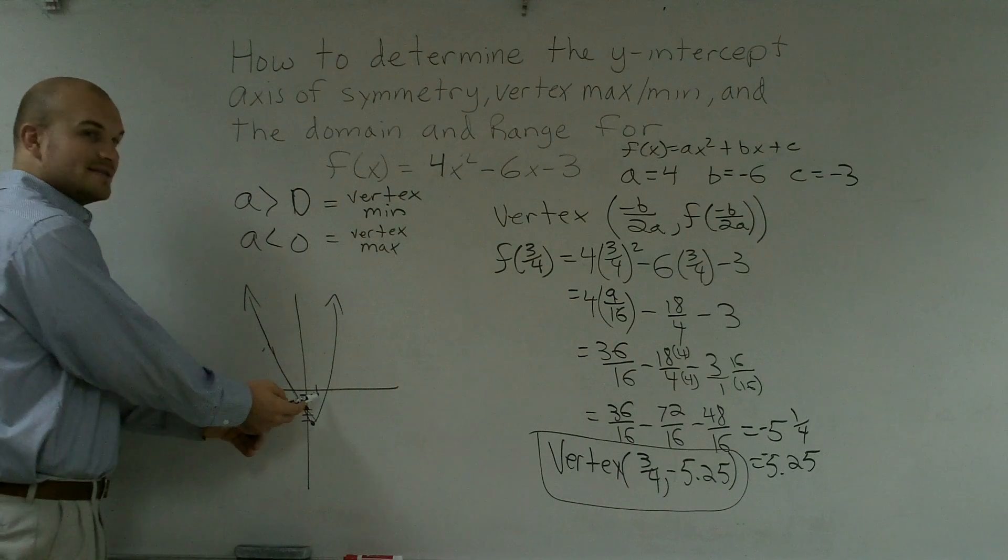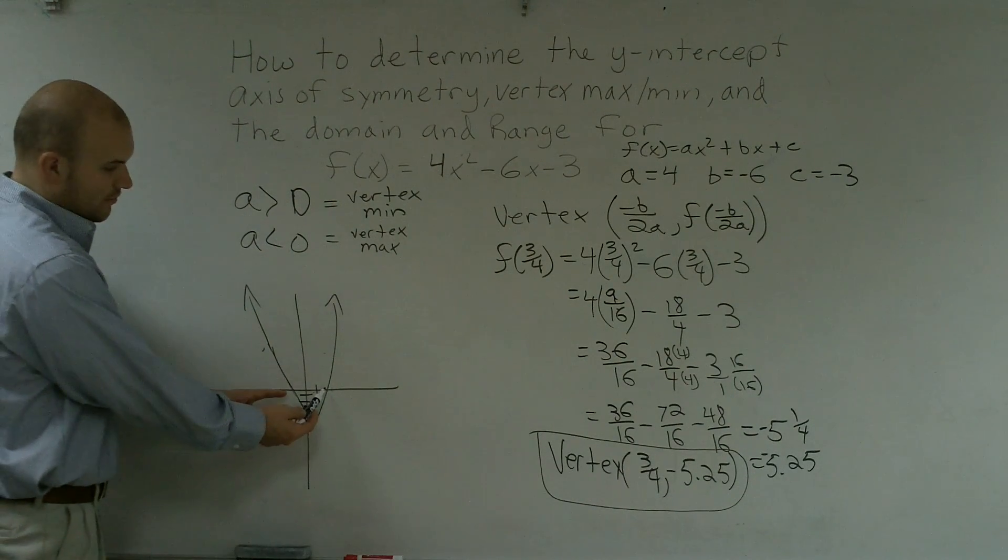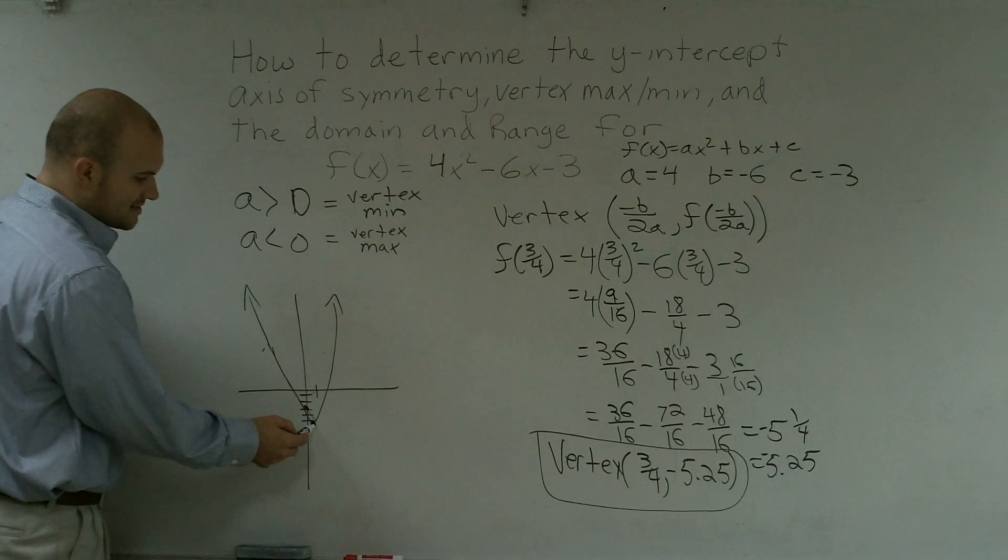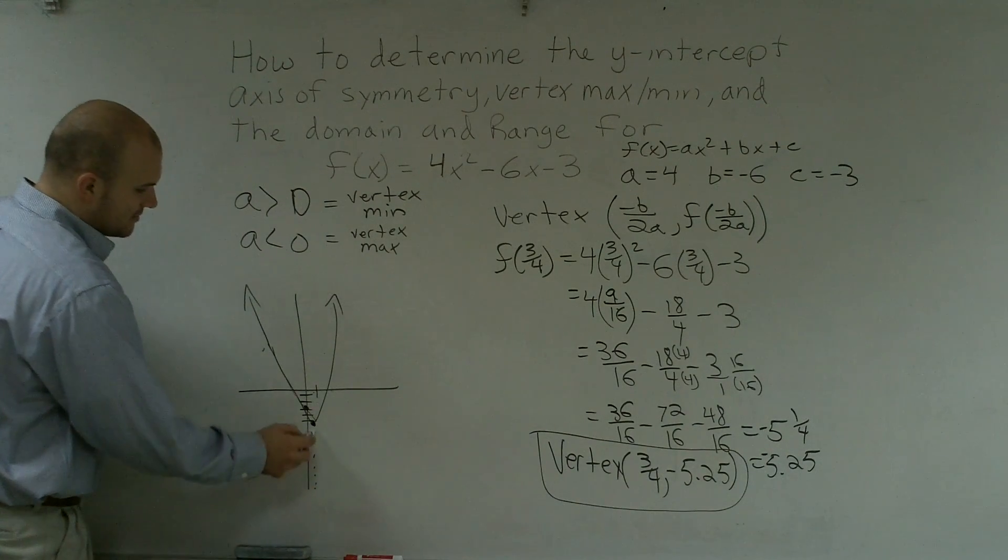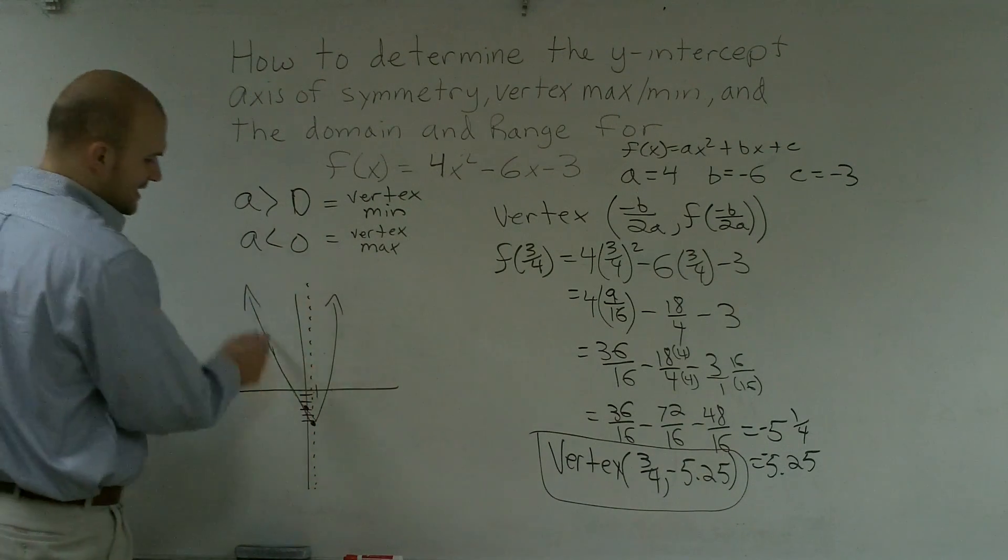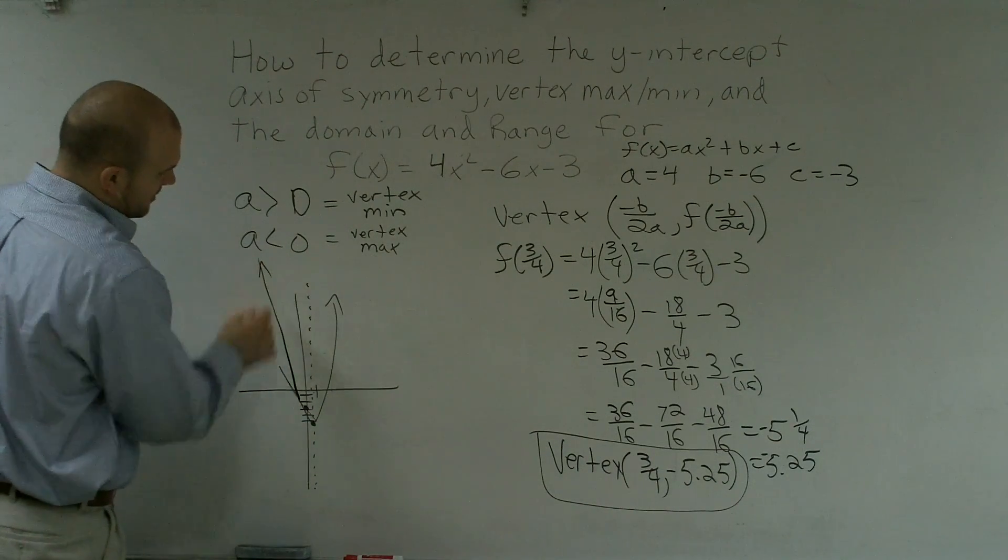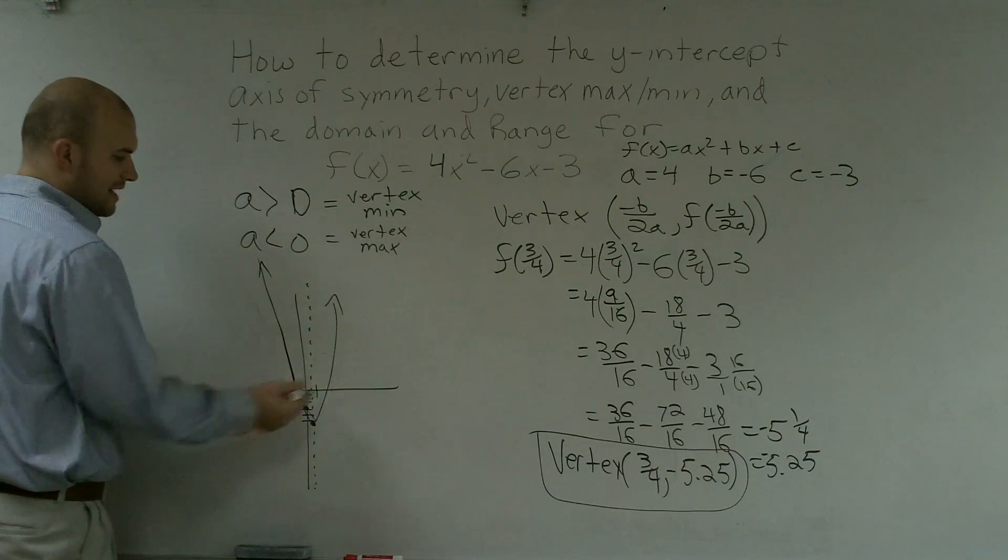So right now all I know is my graph is going to look something like this. I don't know where it crosses the x-axis. That's what we're going to learn in another video. But at least I know it goes through the vertex, and the line of symmetry is at 3/4, so that's where it's, like, equal distance. So if I was going to graph this kind of correctly, it's equal distance on both sides from your line of symmetry.